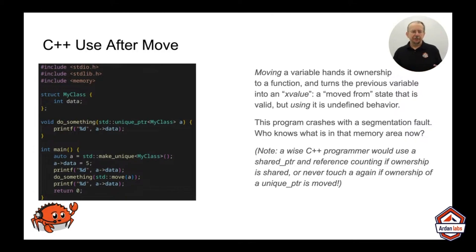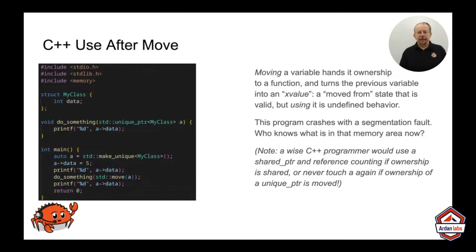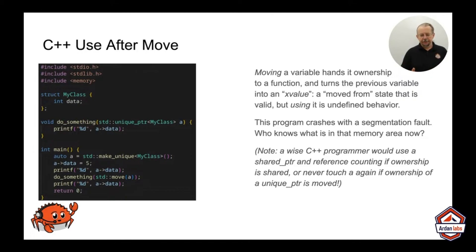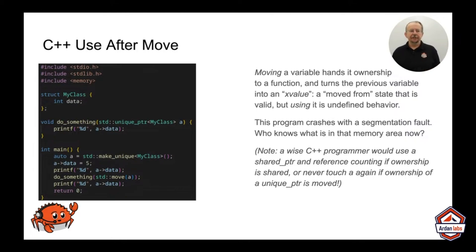Moving may copy the data — it may not. All std::move in C++ does is mark a variable as now being what's called an X value, meaning it has been moved from. It might still be intact, it might not. The only guarantee you have is that it still exists in sufficient state to be deleted. It may have been plundered — you don't know.